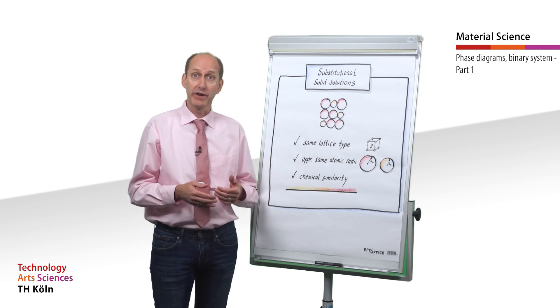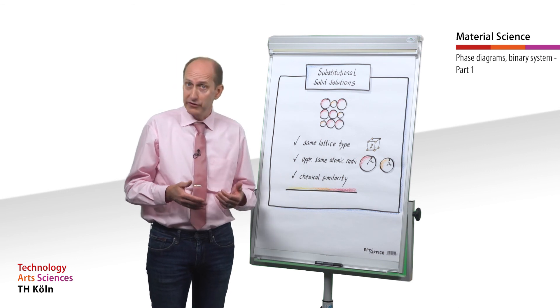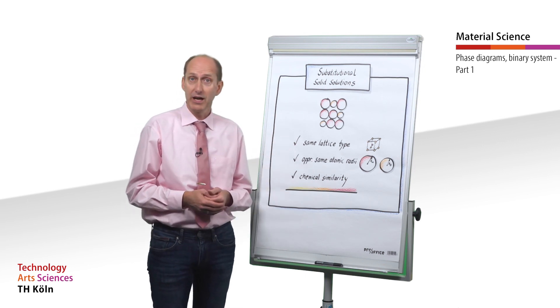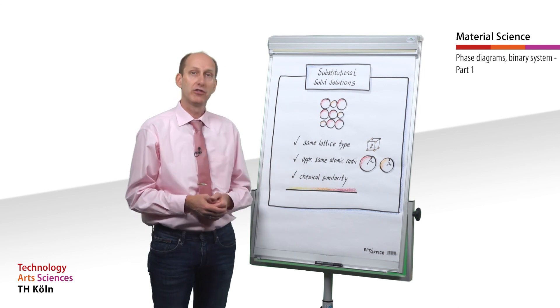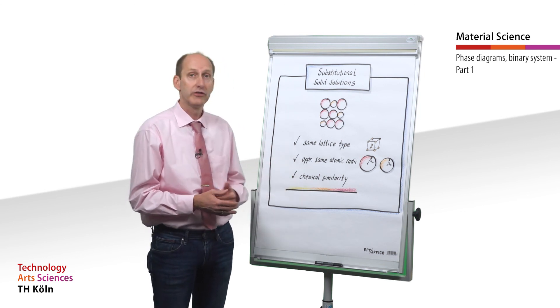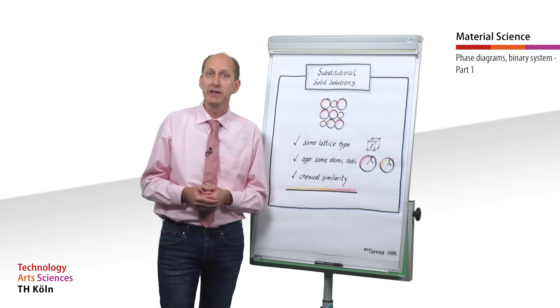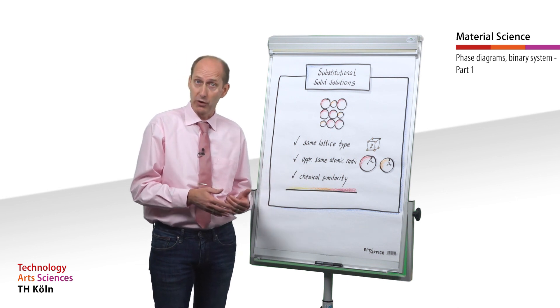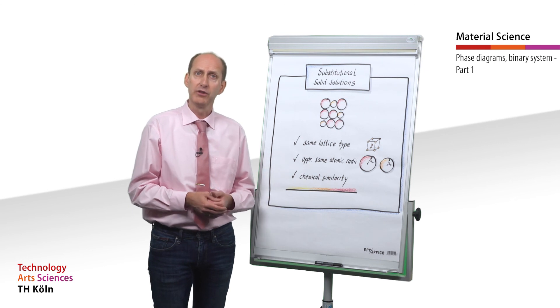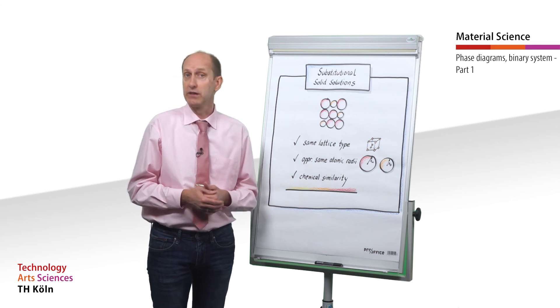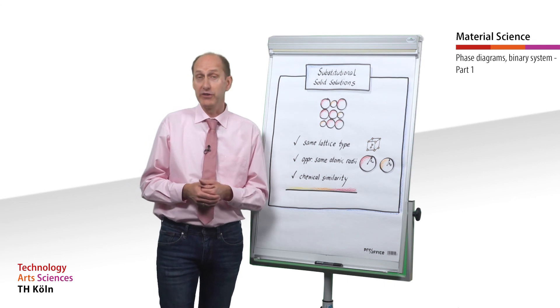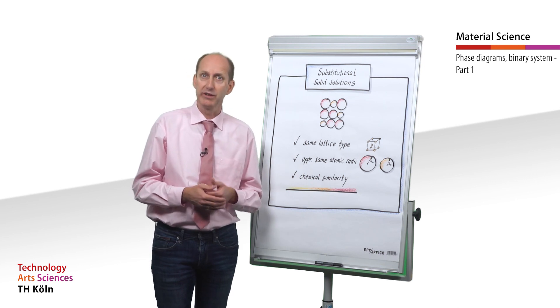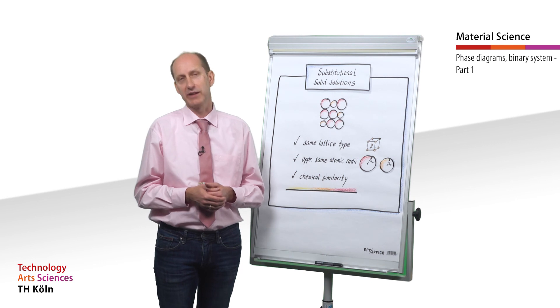Second, substitutional solid solutions. The formation of substitutional solid solutions in any proportional combination of the two components is only possible if both types of atoms dissolved in each other are very similar. That is, when the following conditions are fulfilled: same lattice types, approximately the same atomic radii, and chemical similarity. Typical alloys with complete solubility in the solid state that form substitutional solid solutions are iron-chromium, iron-nickel, gold-copper, gold-silver, and copper-nickel alloys. An important system that forms interstitial solid solutions is iron-carbon in the form of austenite. We will discuss the iron-carbon system in detail in the next chapter.